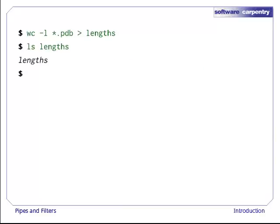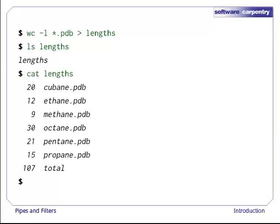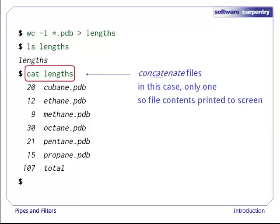ls lengths confirms that the file exists, and we can print its contents to the screen using cat lengths. Cat stands for concatenate. It prints the contents of files one after another. In this case, there's only one file, so cat just shows us what's in it.